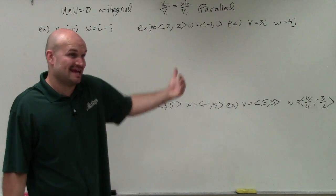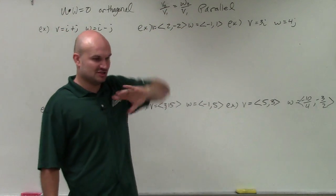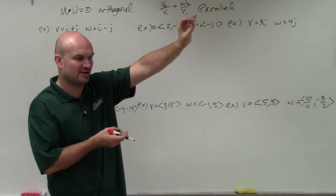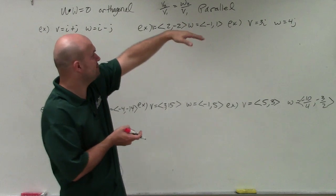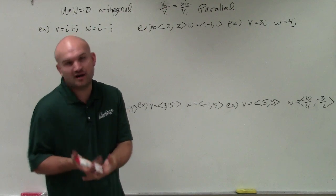If the slopes are the same, then obviously we know we have parallel, right? Vectors are just a directed line segment, so they have their coordinate points, their initial point and their end point or terminal point. Well, by putting the second component over the first component, you're going to get the slope of the vector.